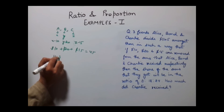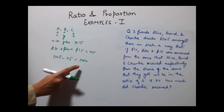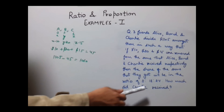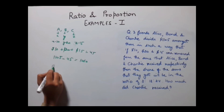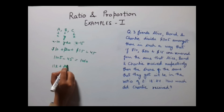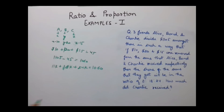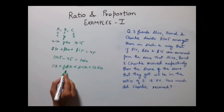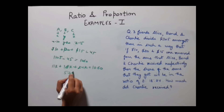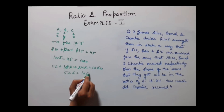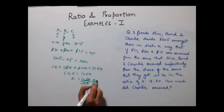So let the shares be 11k, 18k and 24k. Then 11k + 18k + 24k = 1,060. That sums to 53k = 1,060, so k = 1,060 ÷ 53 = 20.